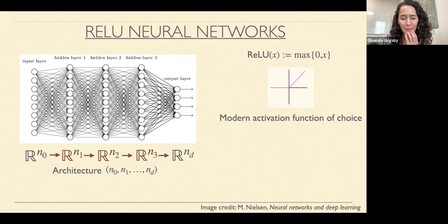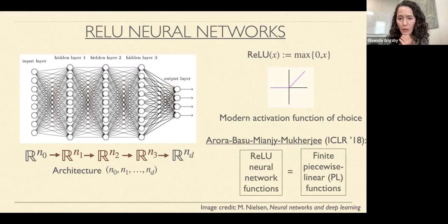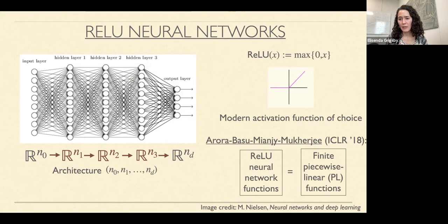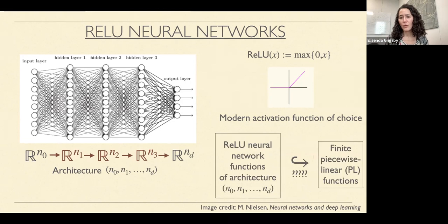One thing well-known about this class — attributed to Arora, Basu, Mianjy, and Mukherjee from 2018 — is that the class of ReLU neural network functions, if you allow any number of hidden layers of any dimension, is exactly the class of piecewise linear functions from R^{N_0} to R^{N_D} with finitely many pieces. You partition your domain into convex polyhedra and the function is continuous and affine linear on each piece. What is quite unknown is: if you fix the architecture, what part of this entire space of finite piecewise linear functions do you map into?